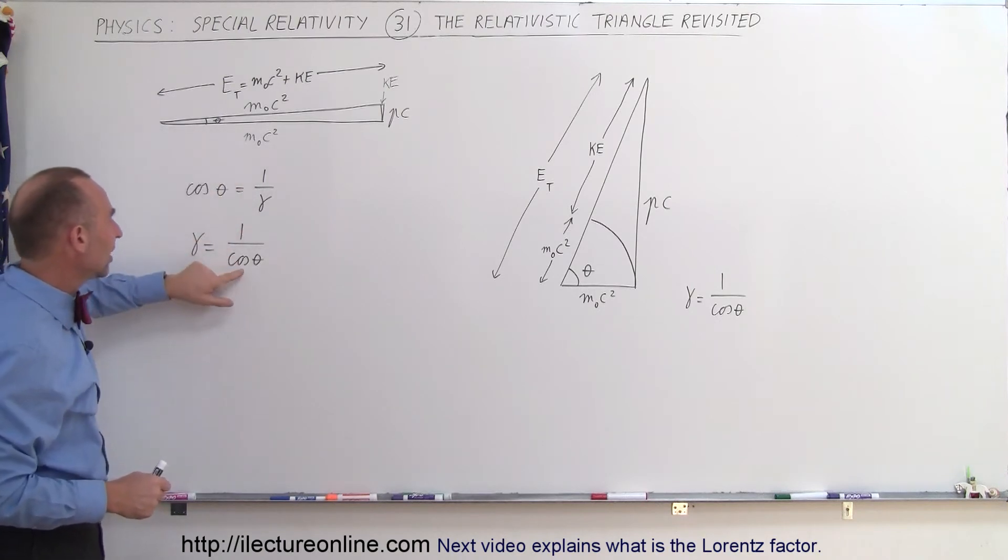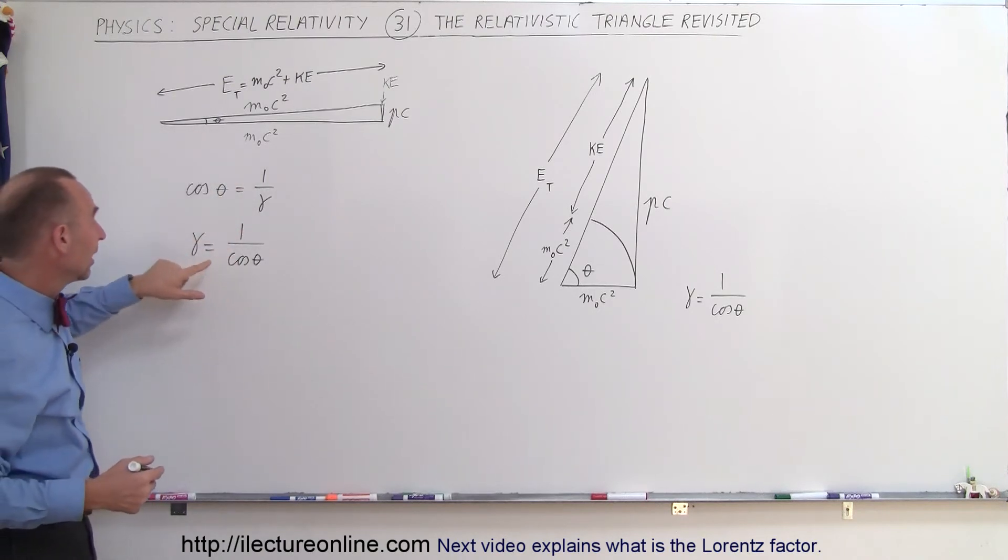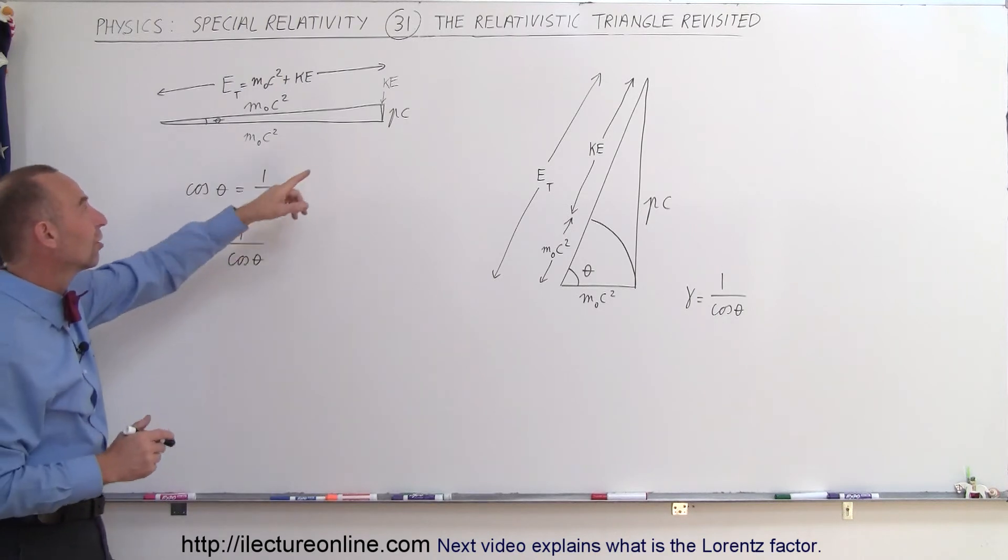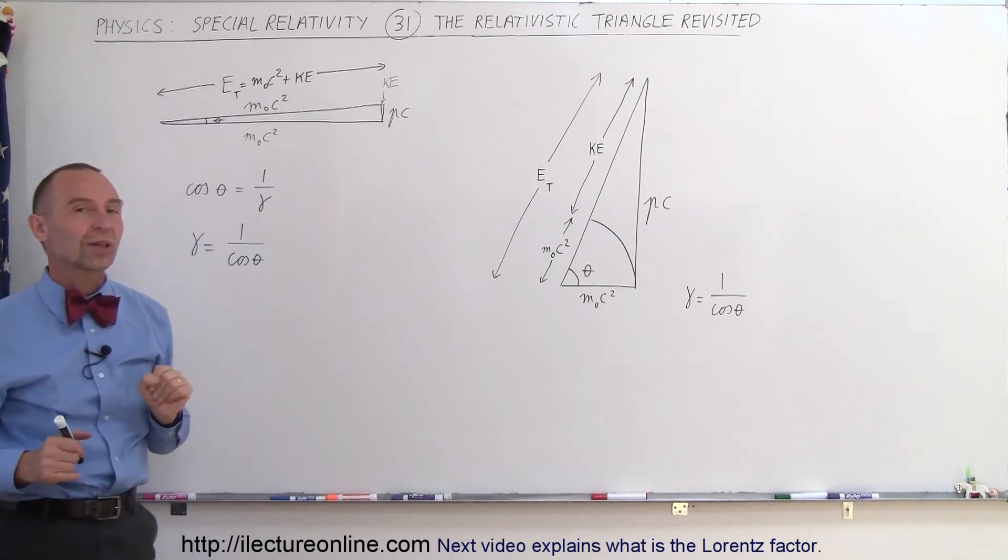Of course, if the angle is measurable, let's say the angle of 2 or 3 or 4 degrees, it does give us a gamma which is slightly bigger than 1, which does give us some relativistic effects right there.